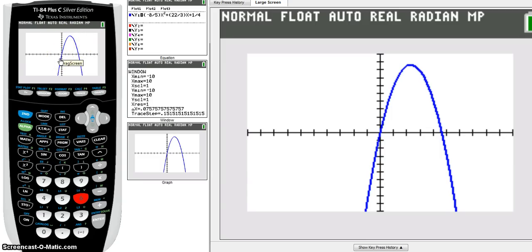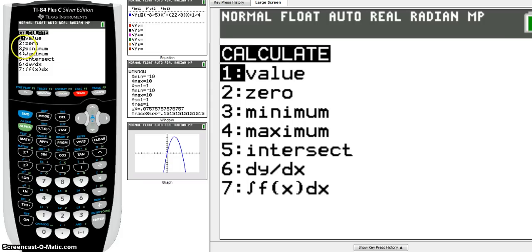So for part B, it says find the max or a minimum using our calculator. In this case, we have a maximum. So to find the maximum, we're going to go to the calculate menu. So we're going to press 2nd and then trace to get us to the calculate menu. Since we want to find a maximum, we're going to choose option 4. Of course, if this was an upward-facing parabola, we'd be looking for a minimum, and we'd choose option 3.